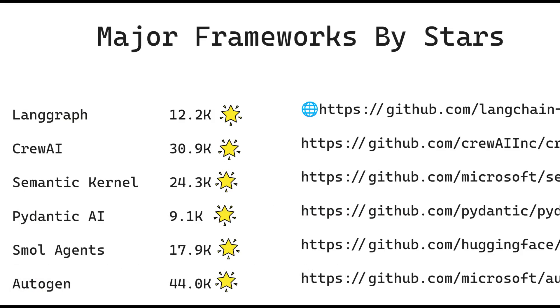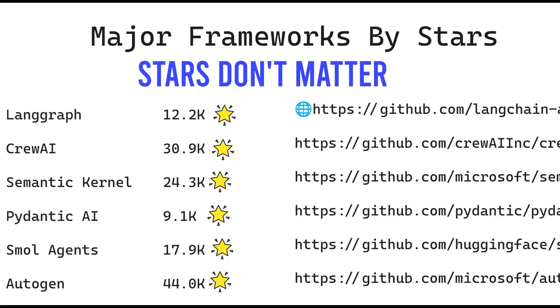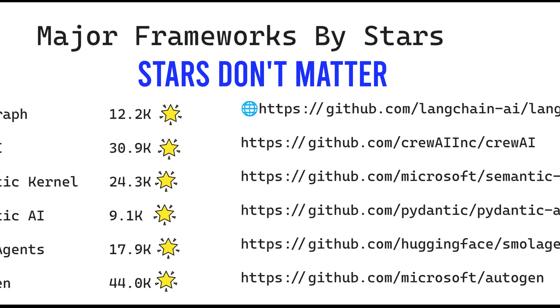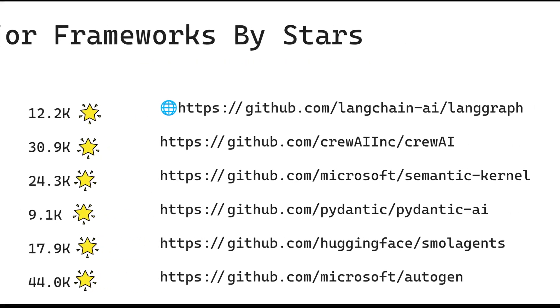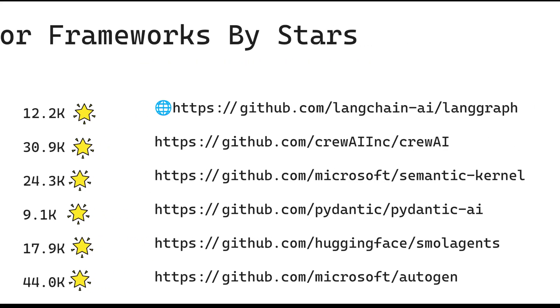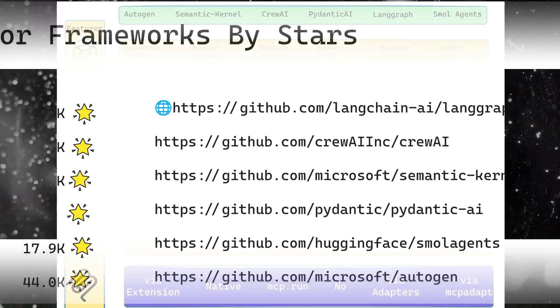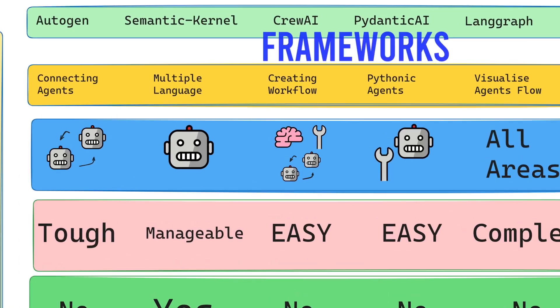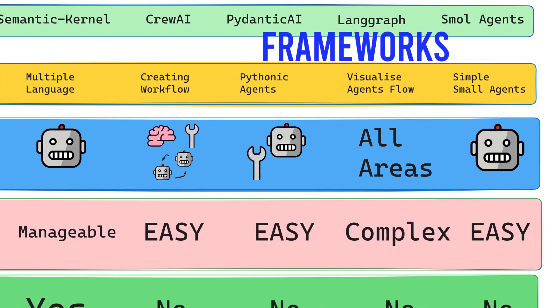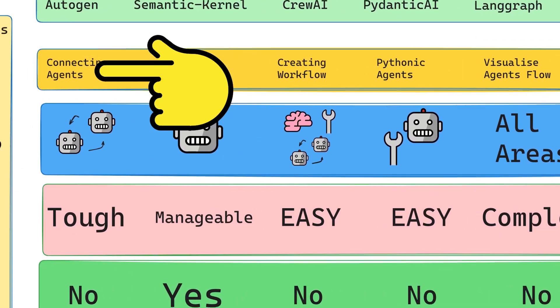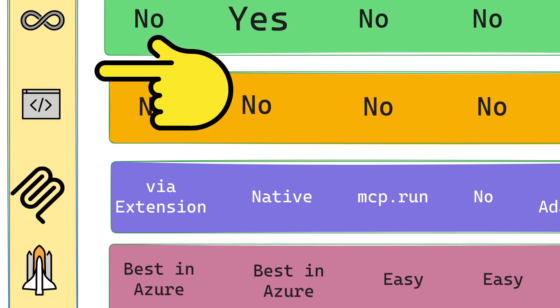There are dozens of frameworks out there — what you're seeing are just the major ones. Stars mean little. What really matters is how each framework delivers on key features, and that's what we're here to unpack. At the top, we see the frameworks being compared, and under each framework its strengths and weaknesses are highlighted.